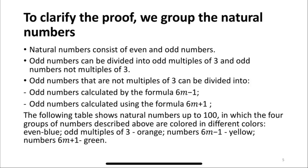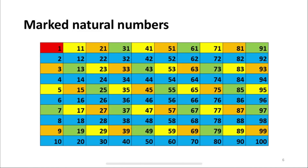To clarify the proof, we group the natural numbers. Natural numbers consist of even and odd numbers. Odd numbers can be divided into odd multiples of 3 and odd numbers not multiples of 3. Odd multiples of 3 can be divided into numbers calculated by the formula 6m − 1 and numbers calculated by the formula 6m + 1. A table shows natural numbers up to 100 with the four groups colored differently: even numbers in blue, odd multiples of 3 in orange, numbers 6m − 1 in yellow, and numbers 6m + 1 in green.